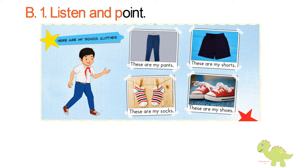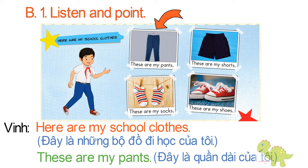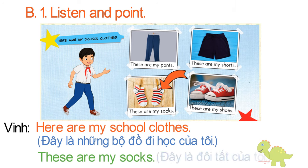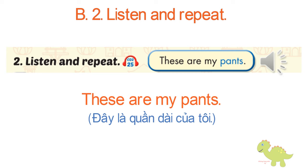B. One. Listen and point. Here are my school clothes. One. These are my pants. Two. These are my shorts. Three. These are my socks. Four. These are my shoes. B. Two. Listen and repeat. These are my pants.